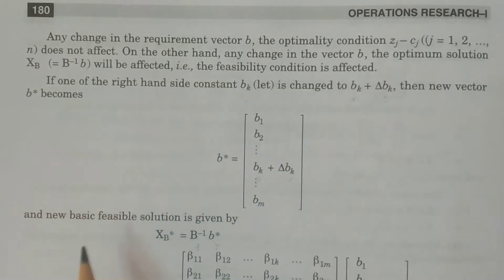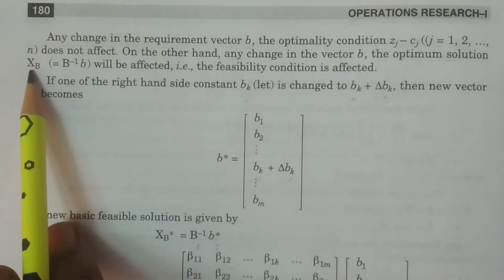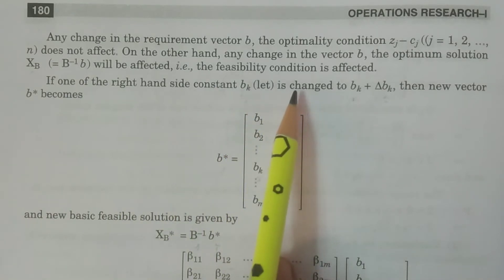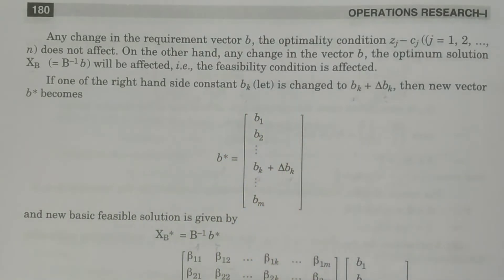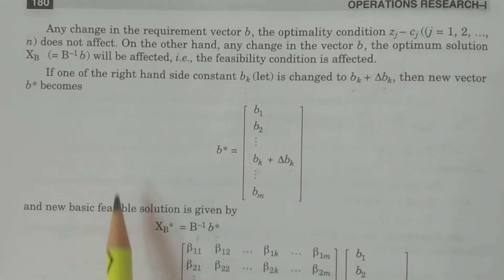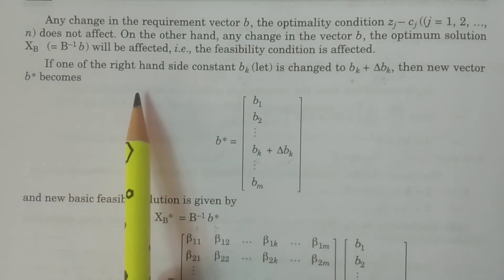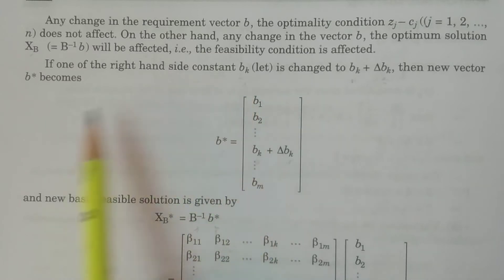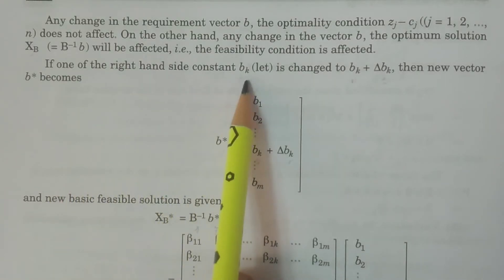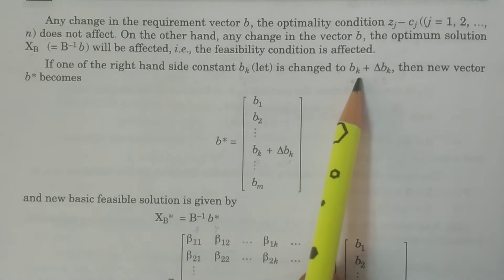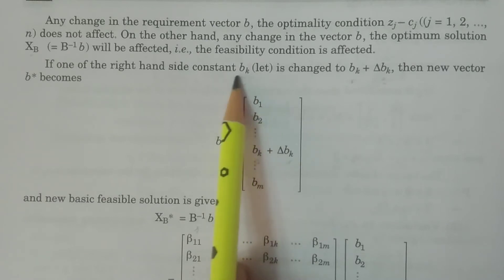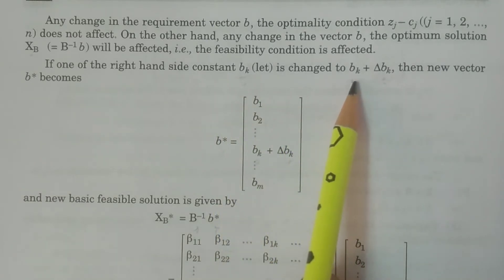Feasibility means x1, x2, ..., xn greater than or equal to 0; that is xB is going to be checked for the feasibility condition. If you check the feasibility, it gives the optimality. Now, considering a real problem in which the constant Bk is changed: if one of the right-hand side constants Bk is changed to Bk plus delta Bk — in the old LPP it is Bk, in the new LPP it is changed to Bk plus delta Bk.